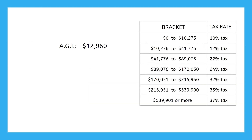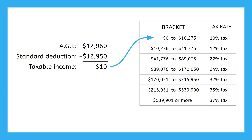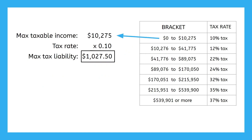Let's say your adjusted gross income was $12,960, and you took the standard deduction of $12,950 in 2022. That leaves you with a taxable income of 10 whole dollars, putting you in the first tax bracket. In that bracket, the marginal tax rate is 10%, so you would pay a whopping $1 in taxes. Any taxable income up to $10,275 goes in the first tax bracket and is taxed at 10%, so the maximum you'd ever pay in the first bracket is $1,027.50.